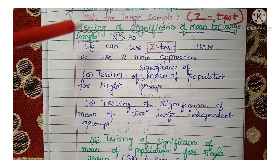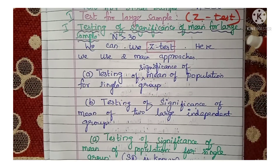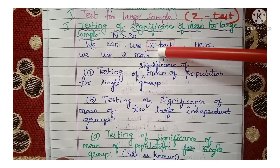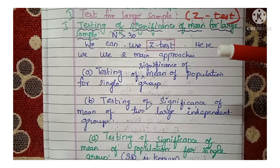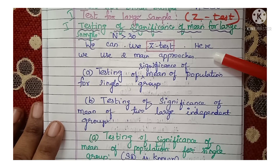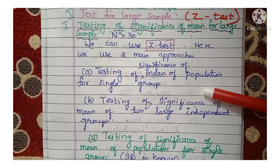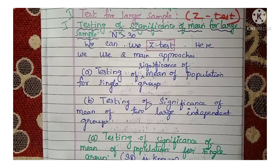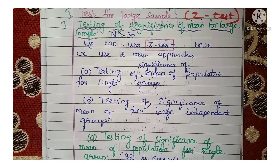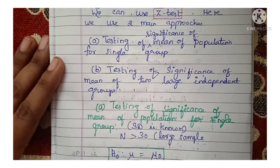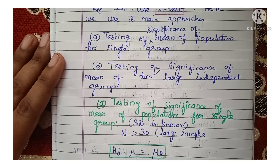We are looking at testing for large samples — the level of significance by means of the Z-test. Testing of significance of mean of population for large sample means the sample size is more than 30, when n is greater than 30. We can use two main approaches: A) testing of significance of mean of population for a single group, or B) testing of significance of mean of population for two large independent groups.